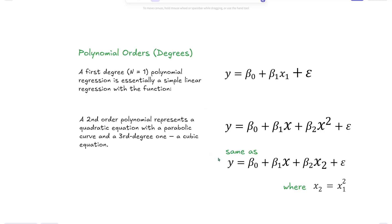A polynomial regression model has orders or degrees. A first degree, n equals 1, is essentially a simple linear regression with this function. The most common, the second order polynomial, represents a quadratic equation with a parabolic curve. The third degree one is a cubic equation. This is the quadratic one here.